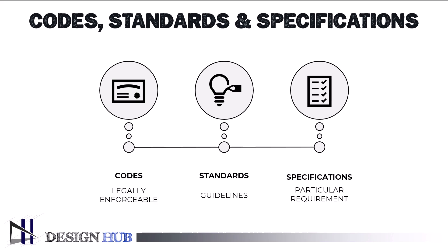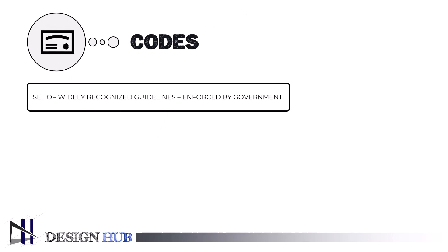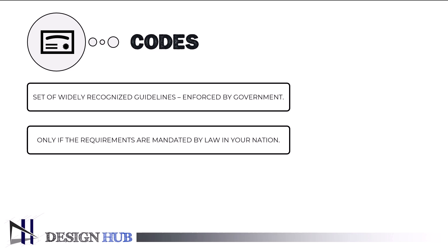ASME established guidelines and standards pertaining to the pressure vessel sector in response to the spike in injuries that occurred during the Industrial Revolution. As an international association, ASME is well-known today, particularly in the oil and gas sector. Codes are a set of widely recognized guidelines that specify what must be done. A standard becomes a code when it is incorporated into a business contract or approved by governmental entities and becomes legally enforceable.